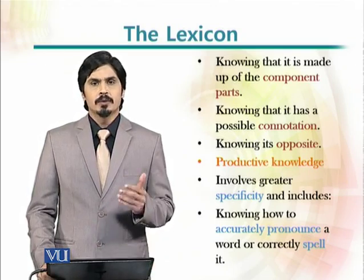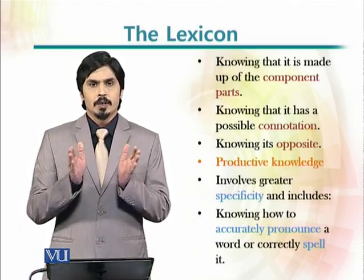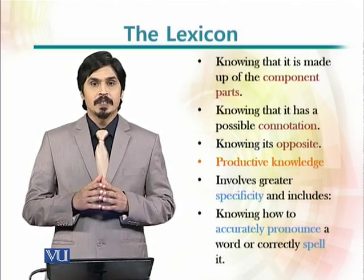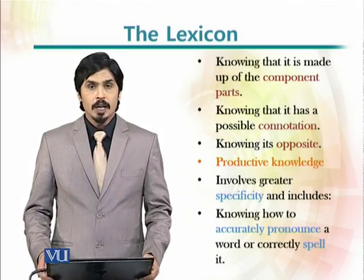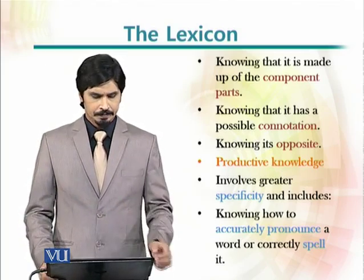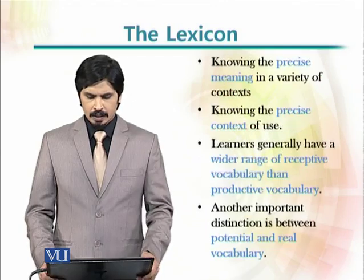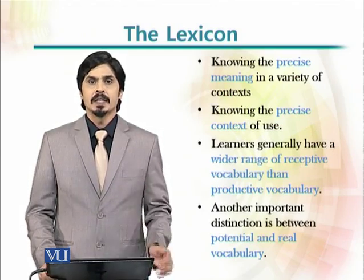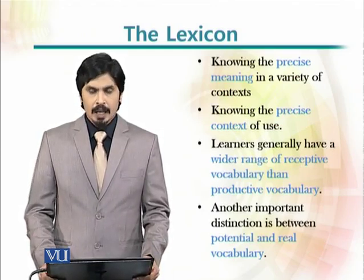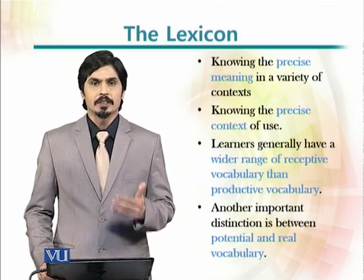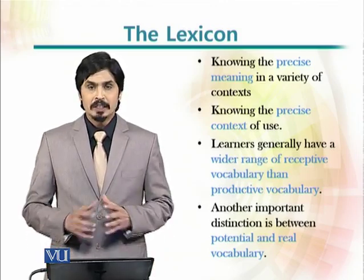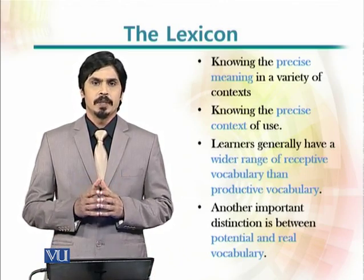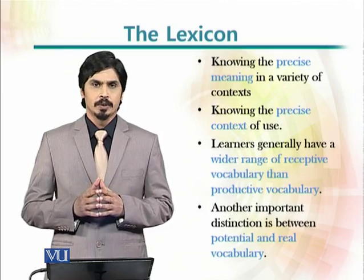In contrast, productive knowledge includes knowing all these things more precisely and more specifically — knowing how to accurately pronounce a word or spell it, knowing the precise meaning of a word and that meaning in a certain context, and knowing the precise context of the use of that word. Learners generally have a wider range of receptive knowledge of vocabulary as compared to productive knowledge, which is what has generally been observed in second language acquisition.